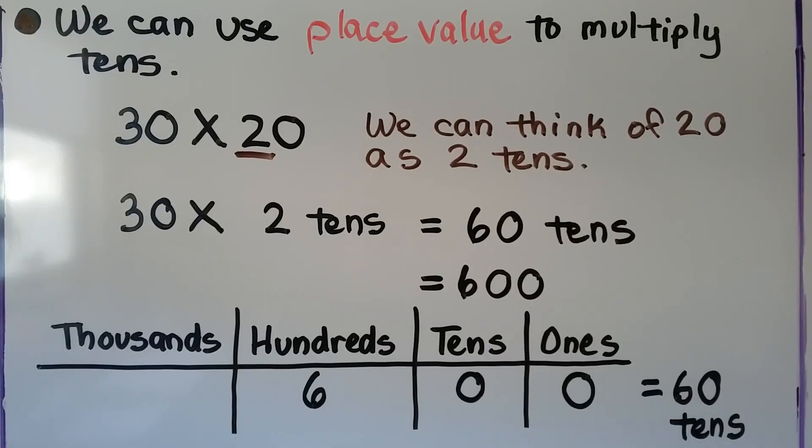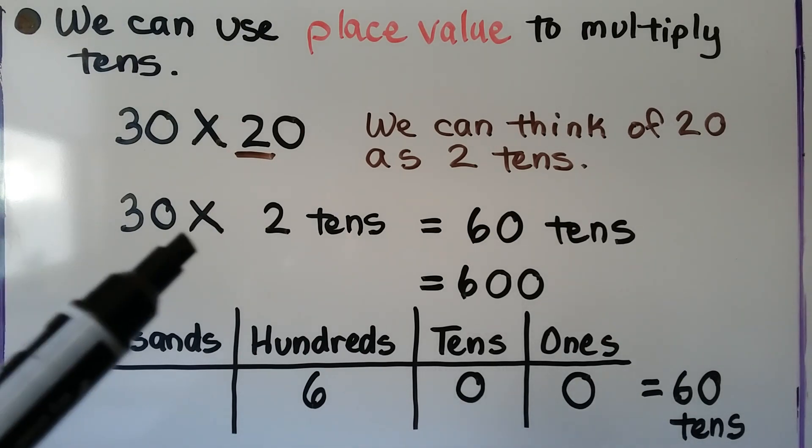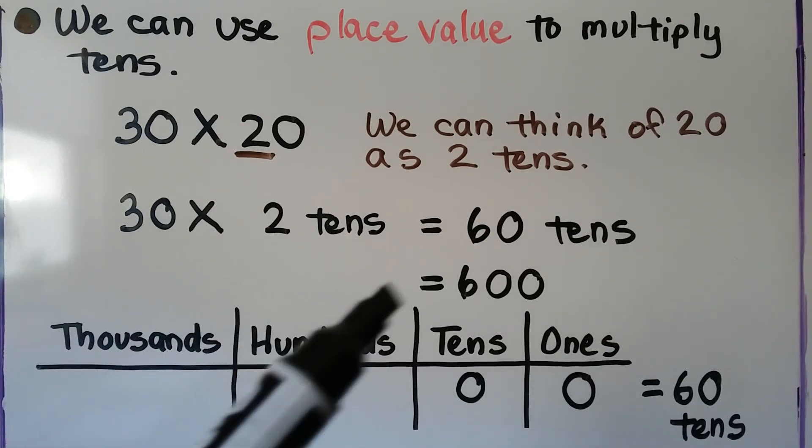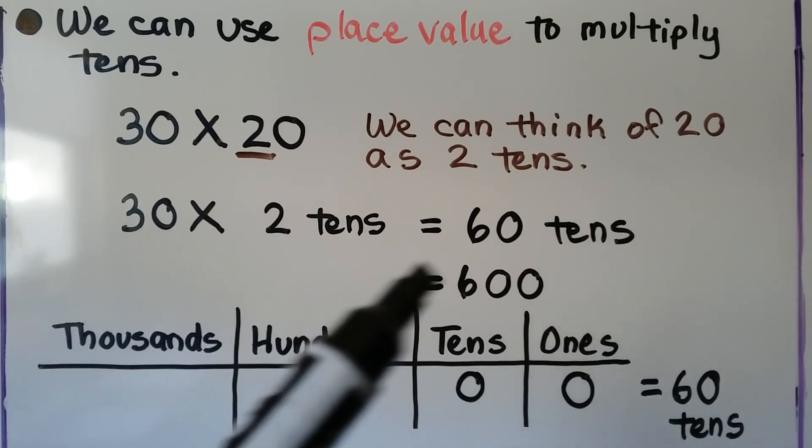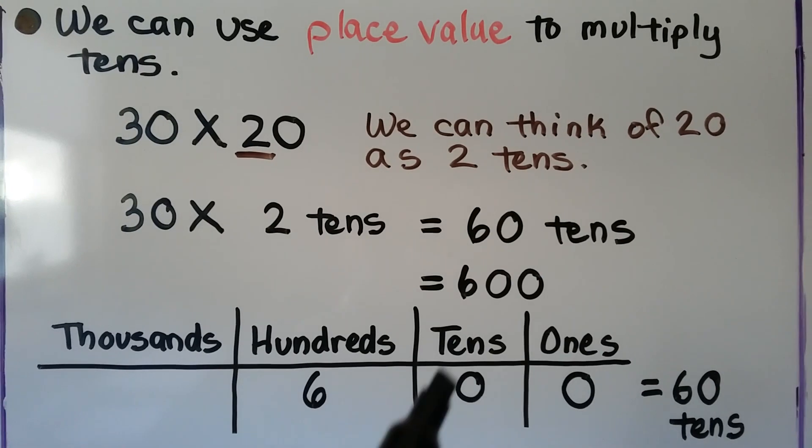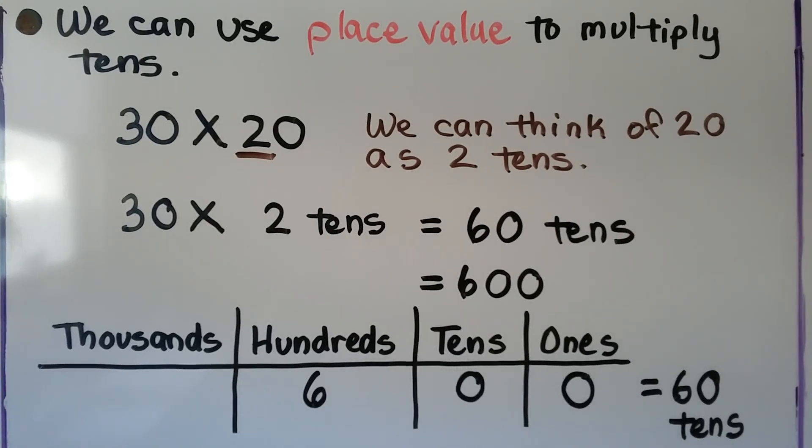So our first strategy is, we're going to use place value to multiply tens. We have 30 times 20. We can think of 20 as 2 tens. So we have 30 times 2 tens. That would be 60 tens. 2 times 30, see? 60. So we have 60 tens. And 60 tens is equal to 600. We can look at 600 as 60 tens.